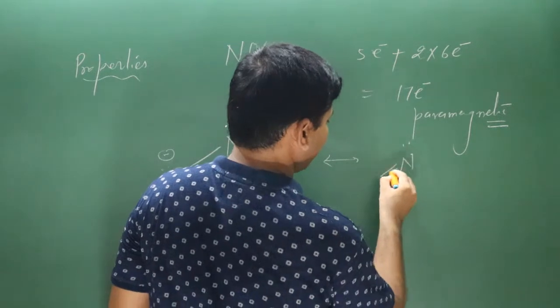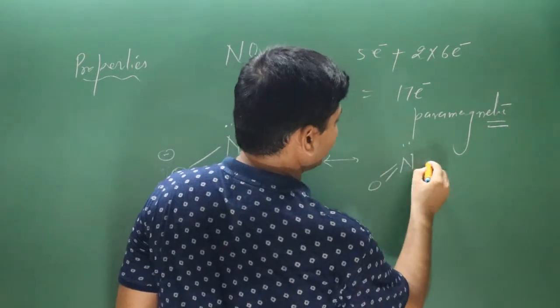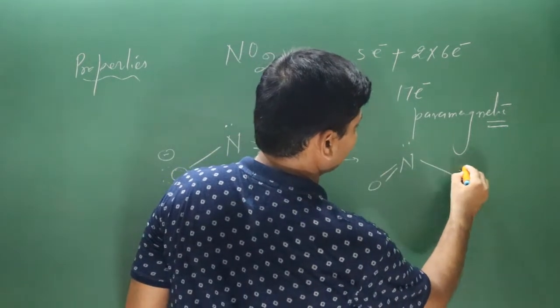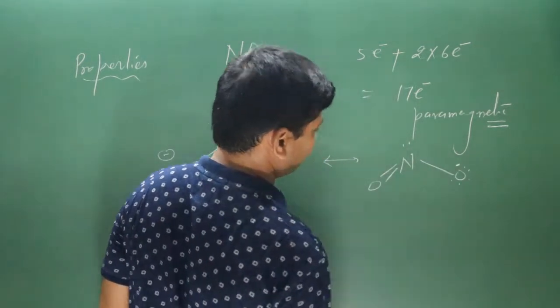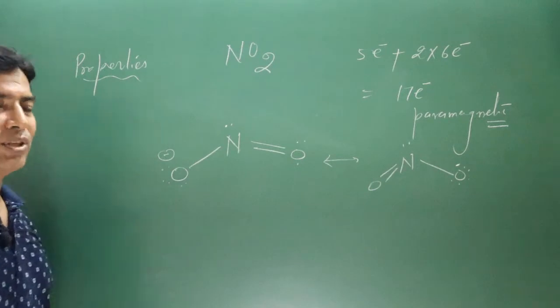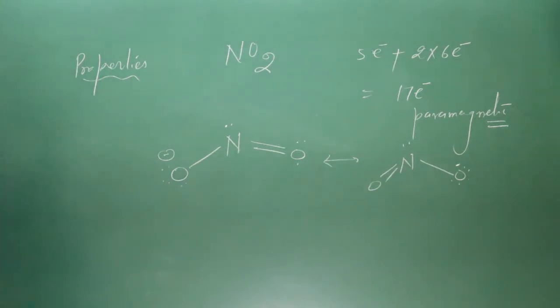One resonating structure shows a lone pair with a double bond put on one side, and the oxygen carrying a negative charge on the other side.